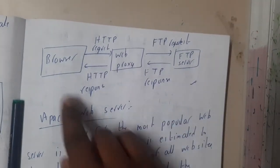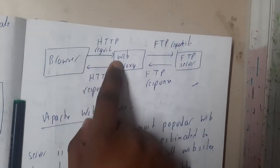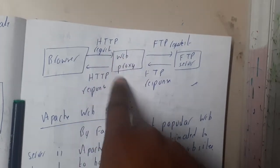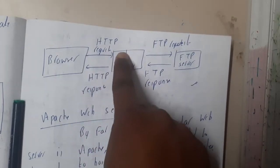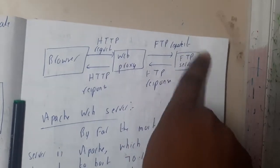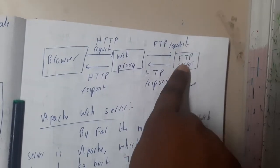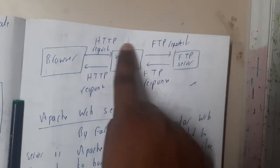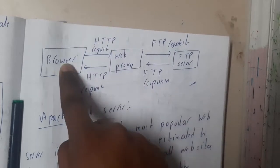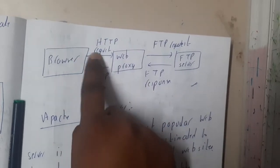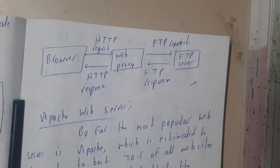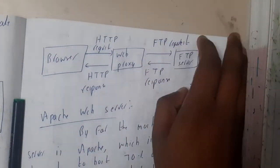Basically, your browser will be sending a request to the web using HTTP only, but the web proxy will be converting it into FTP and sending it to the FTP server. The FTP server will give a response in FTP, and the web proxy will again convert this FTP response into HTTP so the browser can open the webpage.